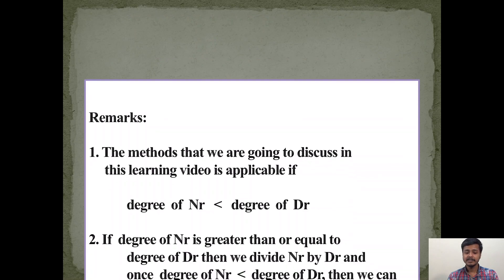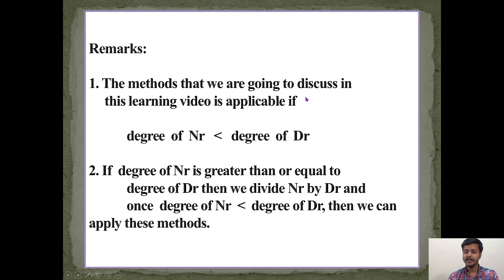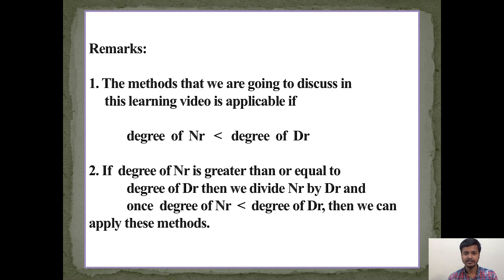The first important remark is that the method we are going to discuss is applicable only if the degree of the numerator is less than the degree of the denominator — numerator abbreviated as NR and denominator as DR. Fractions satisfying this condition are called proper fractions, and the methods of partial fractions apply only to those.